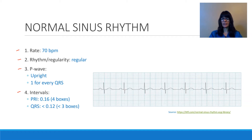This is a six-second rhythm strip, so to determine the heart rate, I'm going to count the number of QRS complexes: one, two, three, four, five, six, seven. My rate is 70, and knowing that the sinus node will initiate an impulse between 60 to 100, I know that this is a normal heart rate.